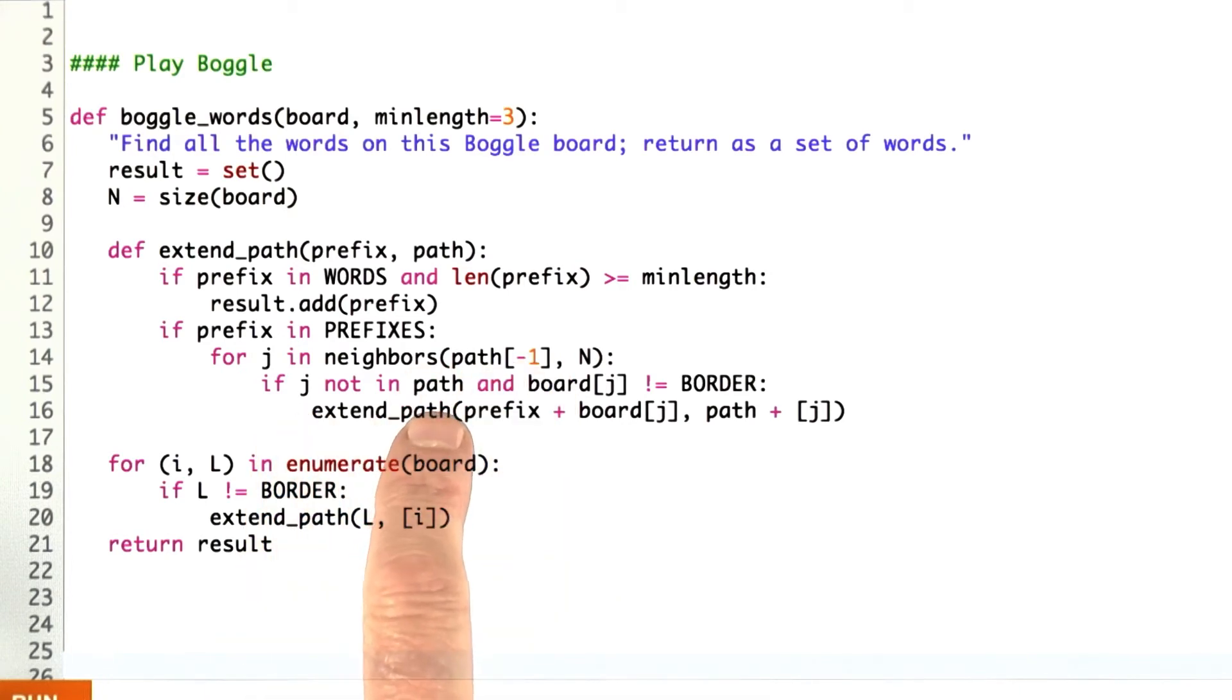And if that j is not in the path, if I haven't circled back yet, and if the contents of that j is not a border square, if it is a valid letter, then I just extend the path. I add that letter onto the prefix. I add that location onto the path and continue.